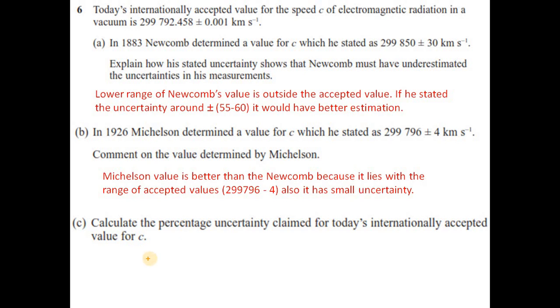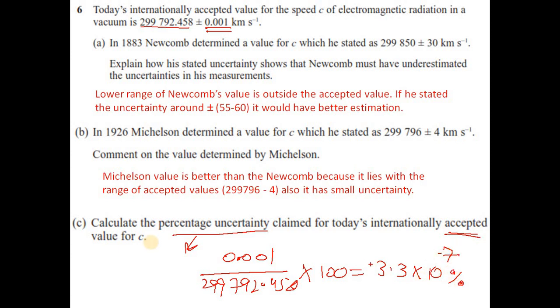Calculate the percentage uncertainty claimed for today's internationally accepted value for C. Percentage uncertainty in accepted value. This is your uncertainty, this is your measured value. We divide uncertainty 0.001 divided by measured value, which is 299792.458 and multiply by 100. Your answer will be 3.3 into 10 to the power minus 7 percent. This is percentage uncertainty in accepted value for C.